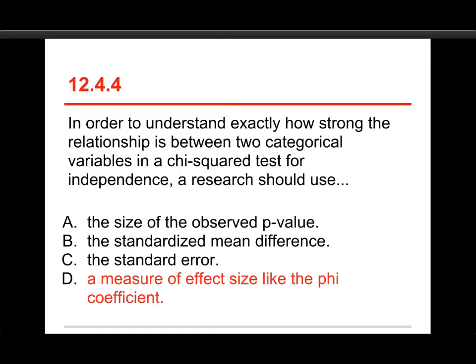The answer is D, an effect size like the phi coefficient. The p-value is used for the inferential part. It's important, you need it, but it doesn't tell you the size of the relationship, it gives you likelihood. Standardized mean difference and standard error are both things from quantitative tests like the z-test or the t-test. That's not what we use here with categorical variables.